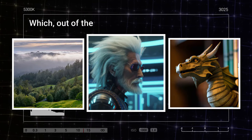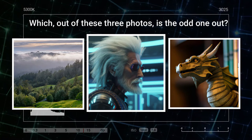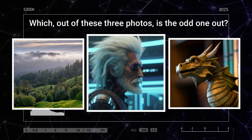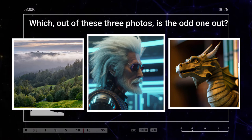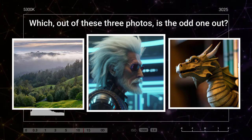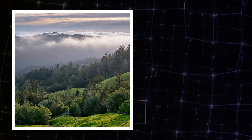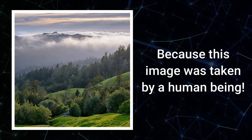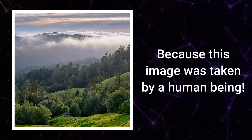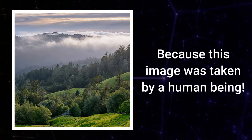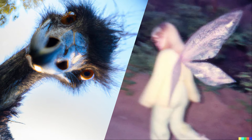I have a question for you. Which out of these three photos is the odd one out? Have you got an answer? Well, the correct answer is that it's this one, because this image was taken by a human being, and the other two images were generated from text prompts using a new image generation AI called DALL-E 2, which just came out in April of this year. And these images are impressive — if you just saw them while quickly scrolling through social media, you'd probably think they were real.